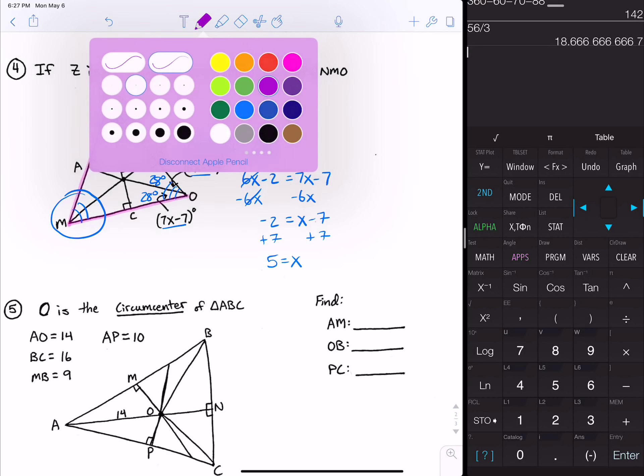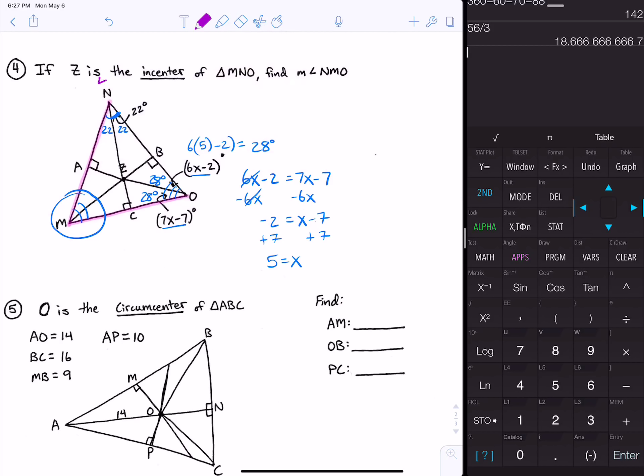In this corner where letter N is, we have a total of 44 degrees. In the corner where O is located, we have 28 plus 28, which would be 56 degrees. The angle we are looking for would be 180 minus 44 minus 56, which would be 80 degrees. So angle NMO equals 80 degrees.